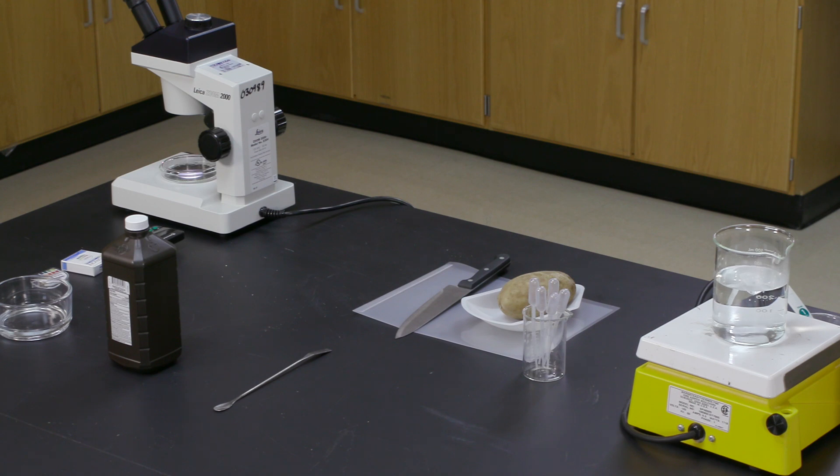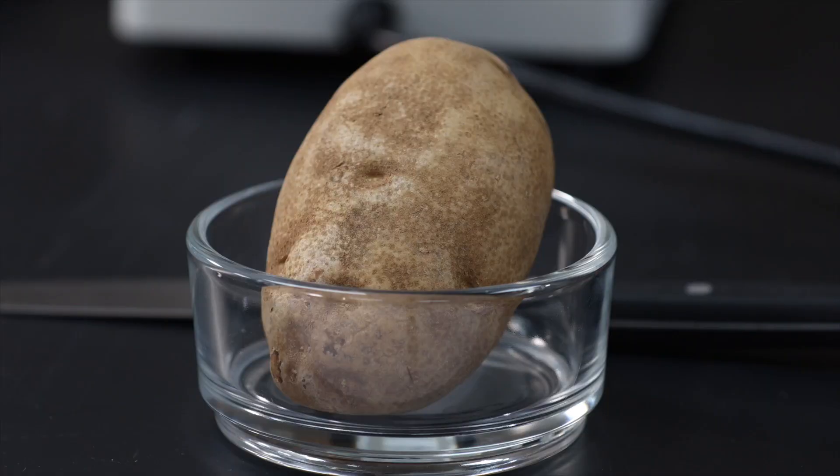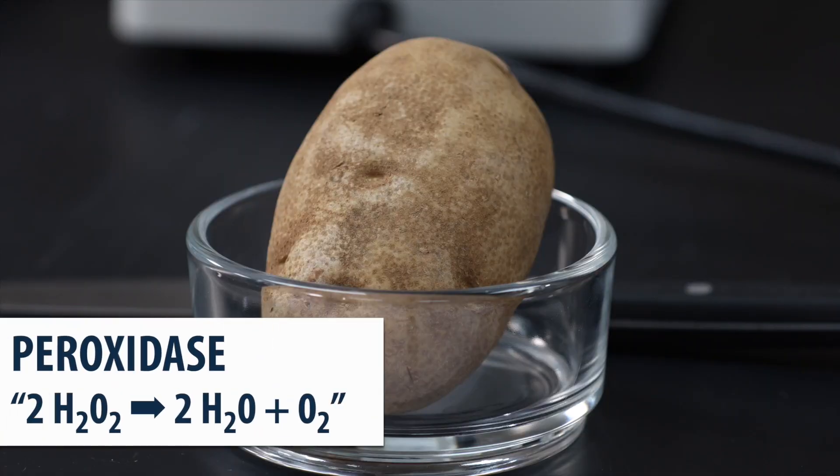In our third and final test, let's examine how heat can destroy the activity of an enzyme in potatoes. The enzyme is a protein. Potatoes have an enzyme called peroxidase, which splits hydrogen peroxide into water and oxygen.